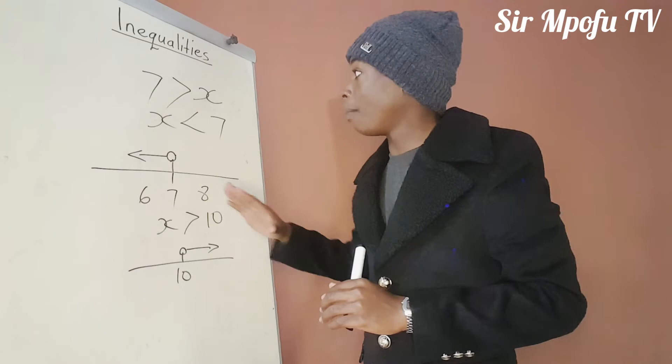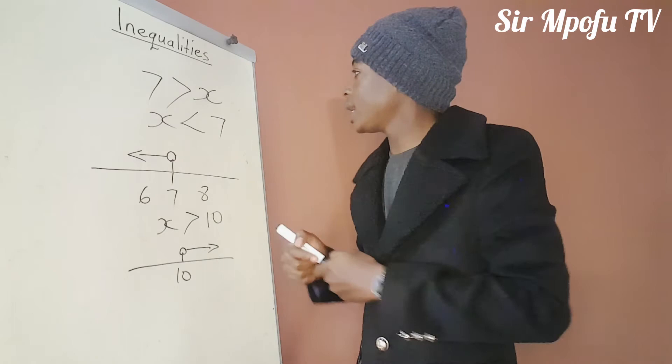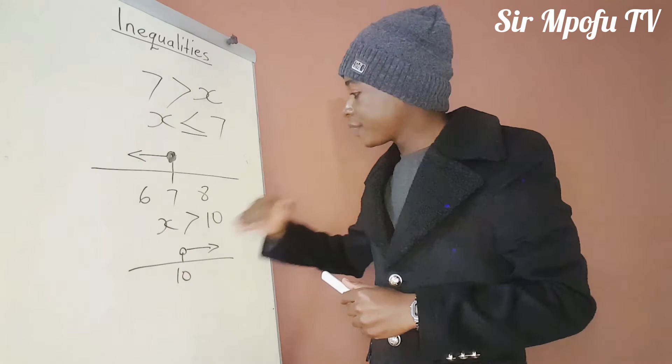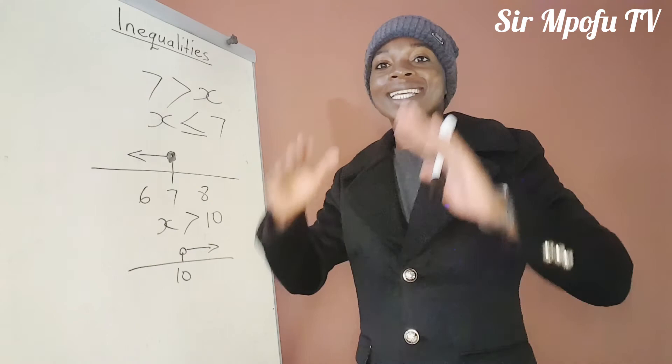If it was a not strict inequality, there is only one thing that will change. If there is now an equal sign below, you just shade the circle to indicate that it's a not strict inequality. The same applies for the other direction — if there was an equal sign, you shade the circle to show that it's a not strict inequality.